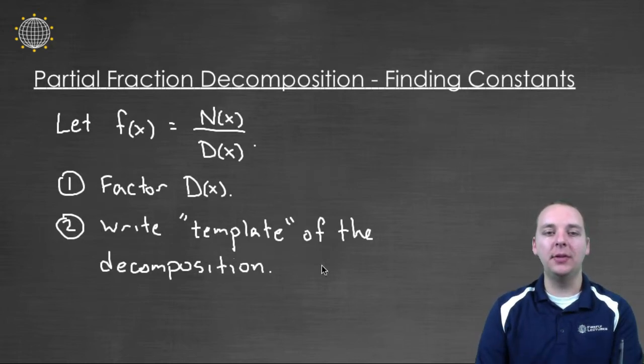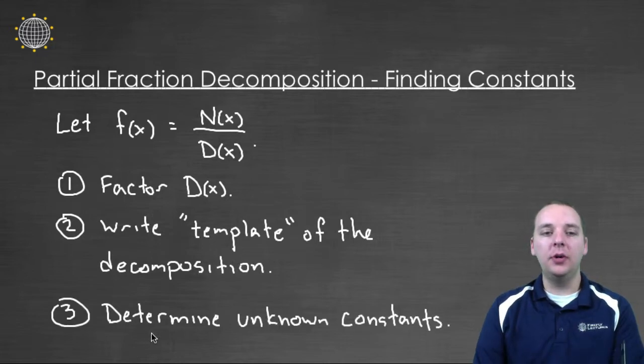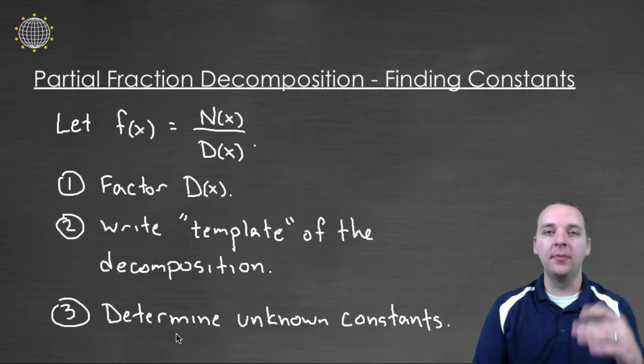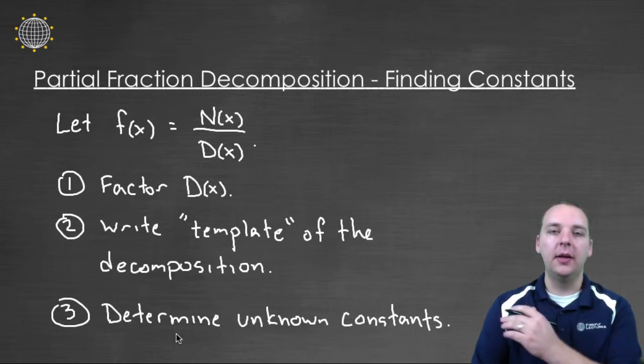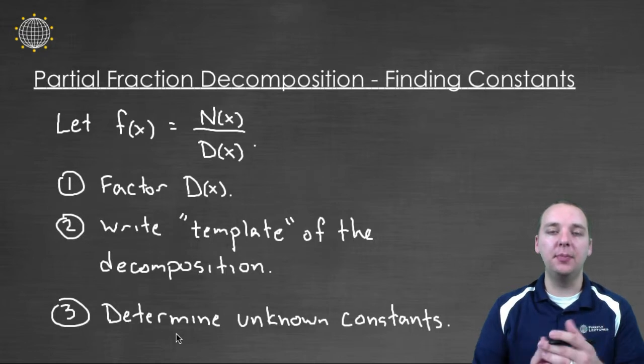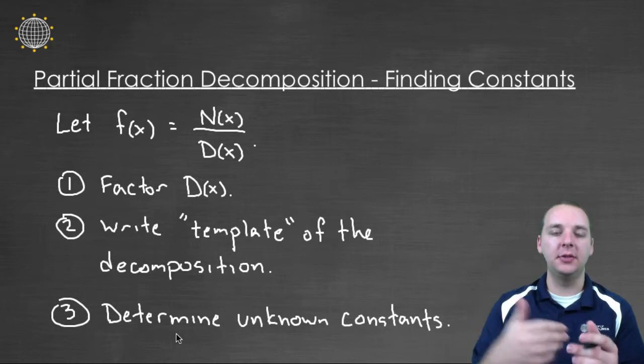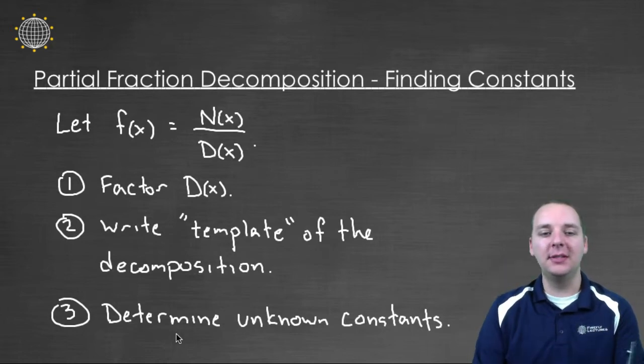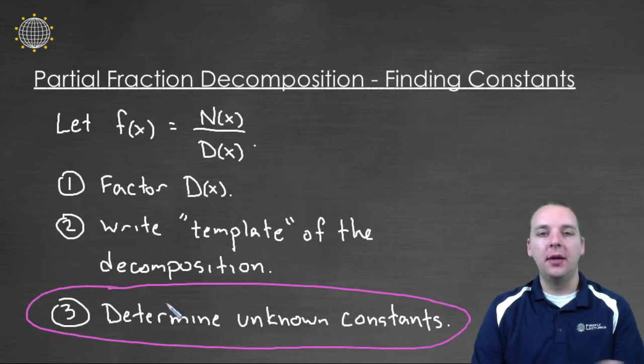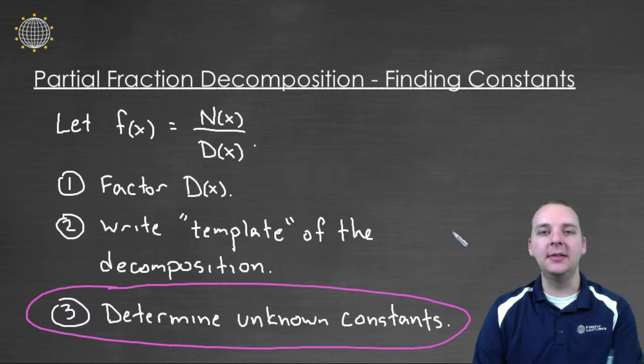But we can write a template of the decomposition. And then when we're done, we can find the unknown constants in the numerator which will fill out or complete the template. Because initially when you write the template, you have something like A over something plus B over something plus C over something. And that's kind of the missing step. And in fact, that's what we're going to talk about in this video, this last step, finding these unknown A's and B's and C's, finding the constants which are in your numerators of your template for the decomposition.